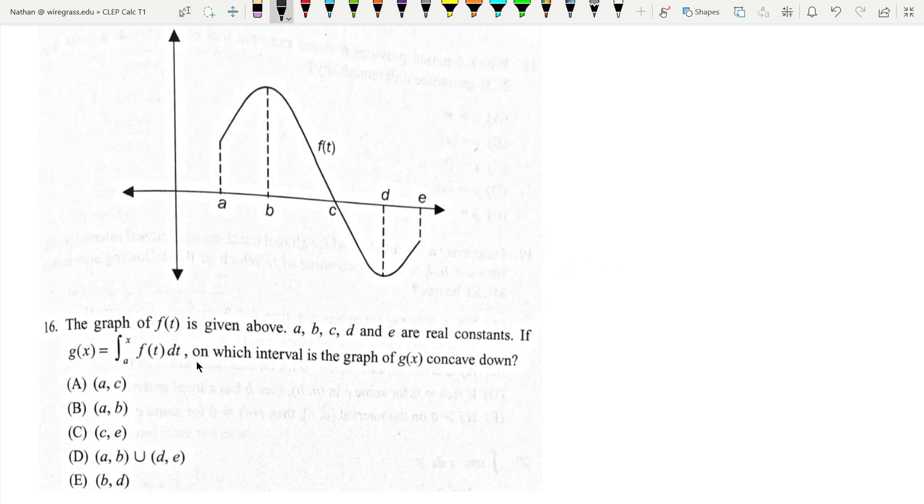This problem is going to be a little confusing because of the wording. We have a graph of f of t, right? That's the key thing here. So this is f of t.